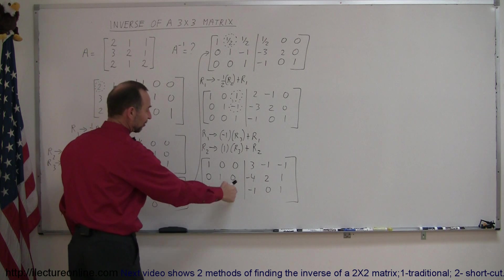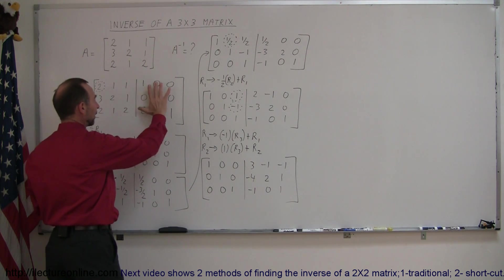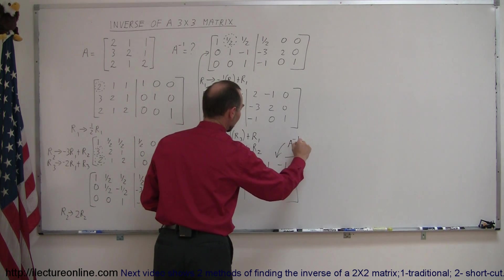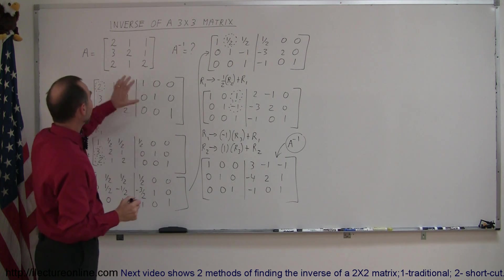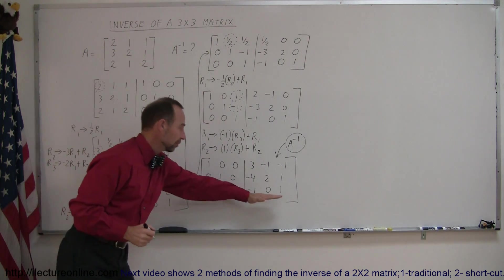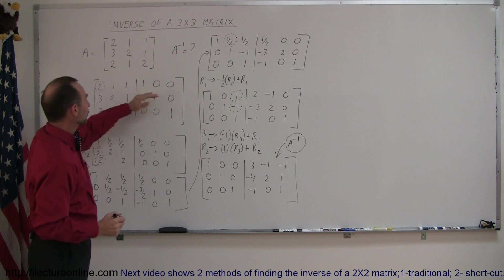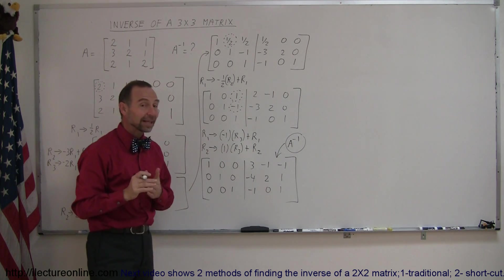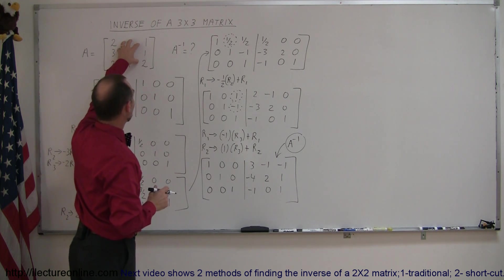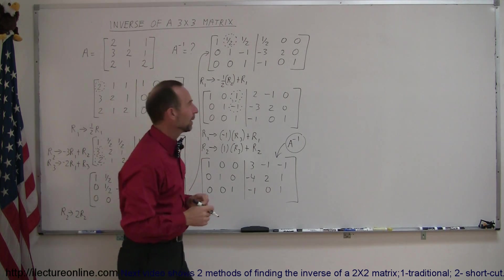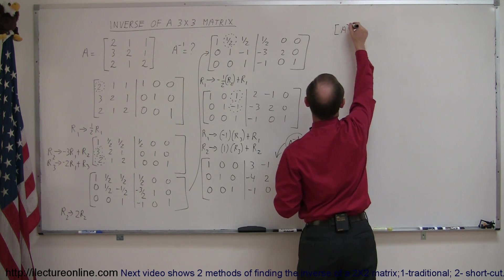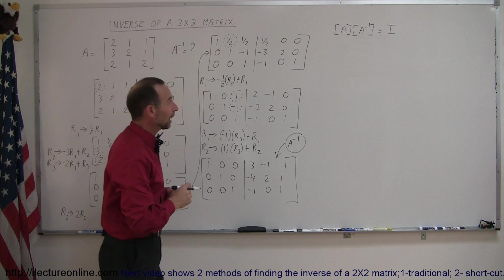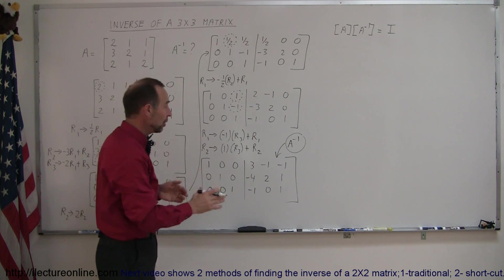We're done. On the left side we now have the identity matrix — what we started with on the right side. And the matrix on the right side has turned from the identity matrix into the inverse of matrix A, written A to the minus one. To find the inverse of A, you join the original matrix with an augmented identity matrix, go through the row reduction process to make the left matrix become the identity matrix, and what you end up with on the right is the inverse. To check, multiply matrix A times its inverse — you should get back the identity matrix.